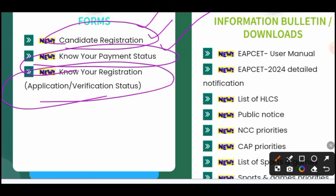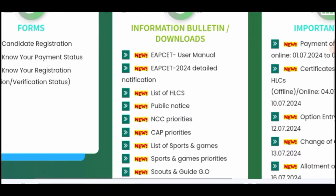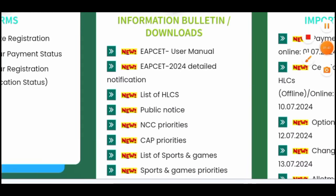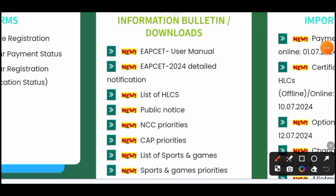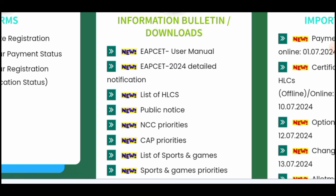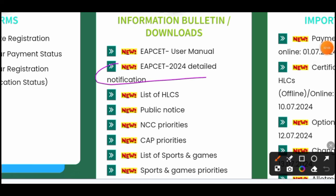In case you are called for the HLC, you can get the certificate verification done. You can verify the certificate online and verify all the necessary details. In the information section, you will find the APS user manual. You will complete the A to Z process of registration using this manual. In case you have any doubts, check the APS user manual — it contains the complete details in the notification.